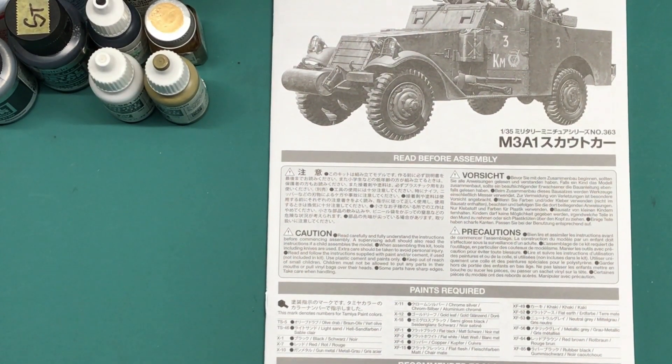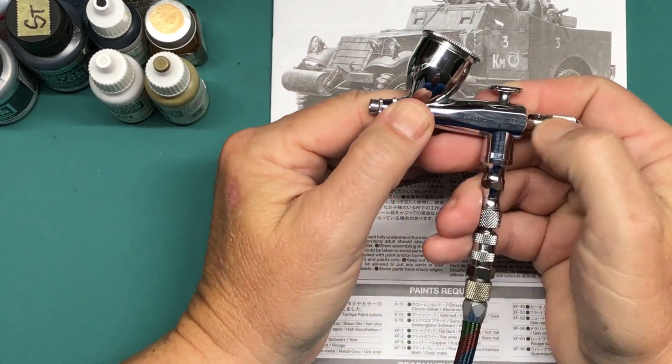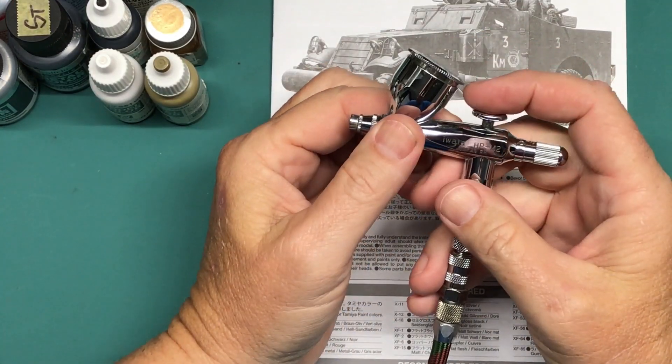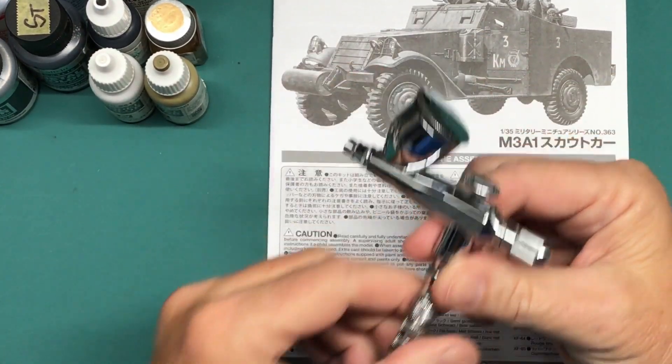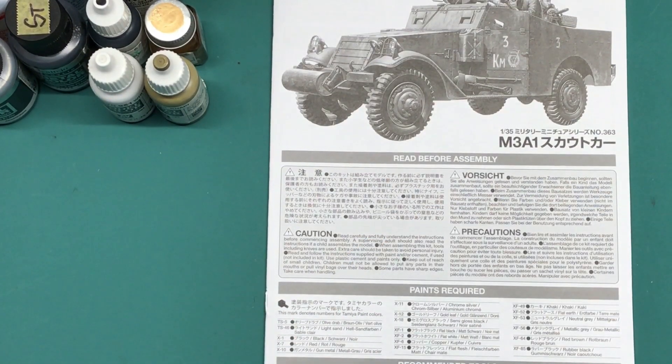The last tool that I will be using is my Iwata HP M2 single action airbrush. I'll be using this for the primer, for the paint, and then I'll just use an assortment of regular paint brushes for the detail painting.